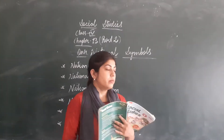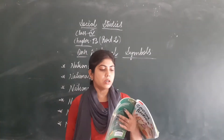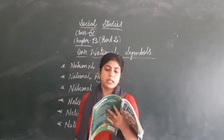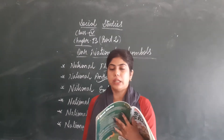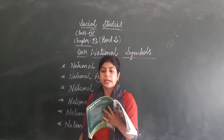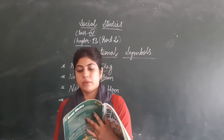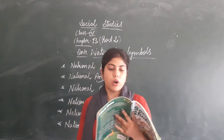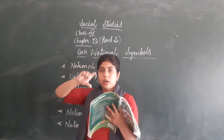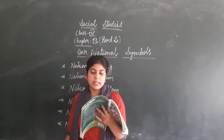Next is the national bird, that is the peacock. Our national bird is the peacock. It symbolizes qualities like beauty, grace and pride. You know that peacock looks very beautiful, so it is the symbol of beauty, grace and pride. It is a colourful blue-green bird with a fan-shaped crest of feathers and a long slender neck.